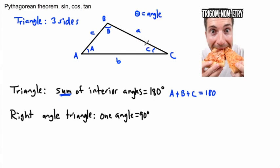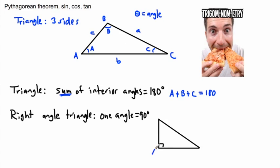Finally, we have something called a right angle triangle — that's when one of the angles is 90 degrees. It doesn't matter which one. People often draw right angle triangles oriented a specific way, and we use a little square symbol in the corner to indicate that angle is 90 degrees. So here we have angles A, B, and C with A being 90 degrees.